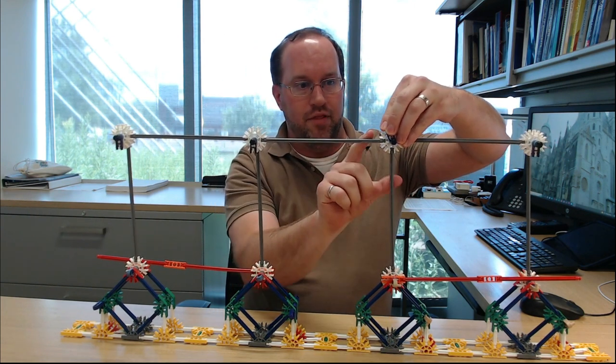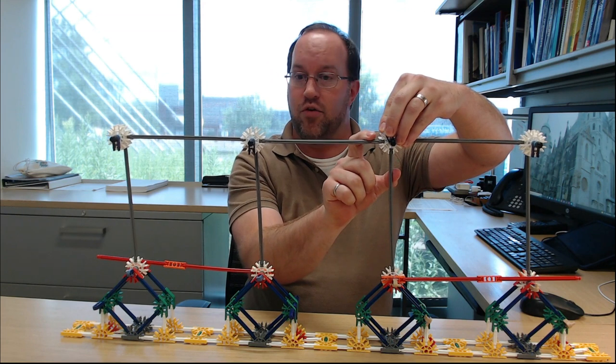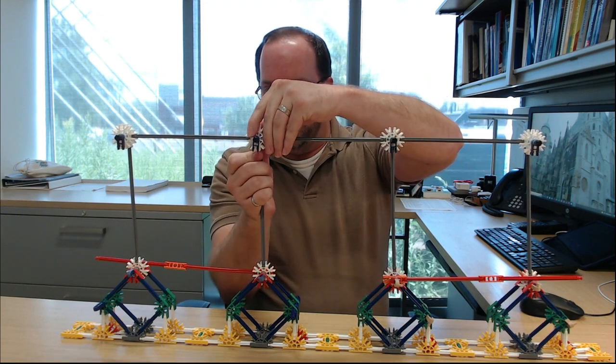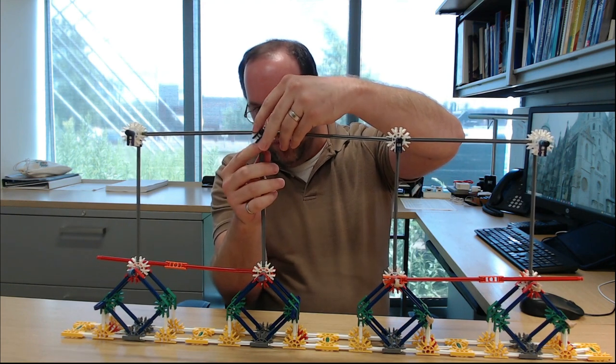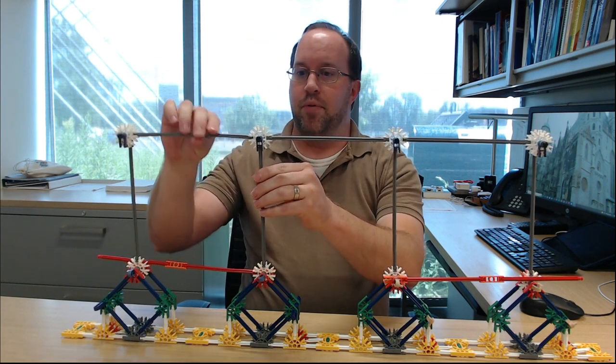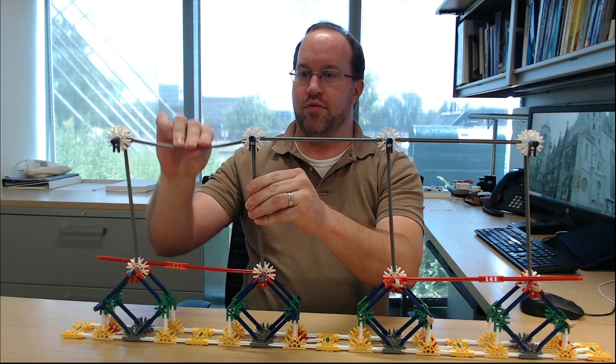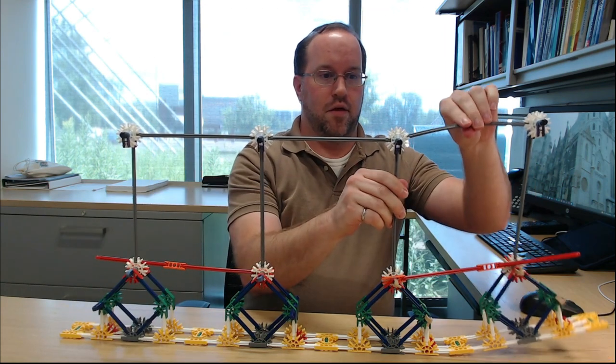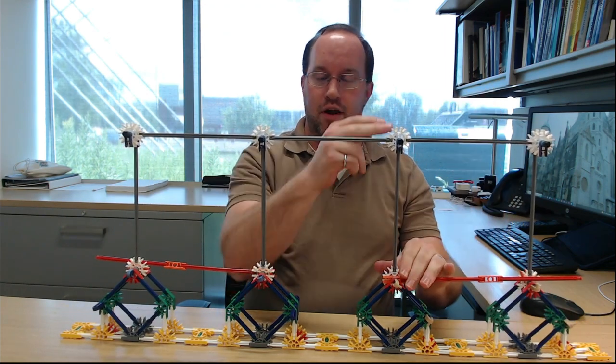So now this beam and this column are connected together integrally and now this beam and this column will be connected together integrally. My two outside places as you can see here are still free to rotate but now I have a single moment frame in the middle.